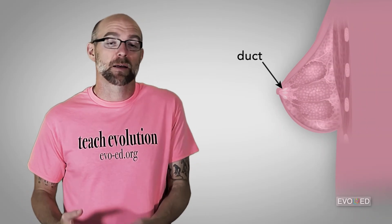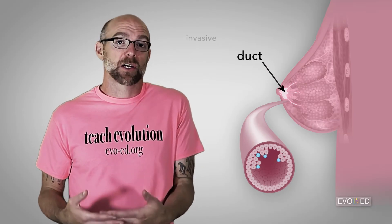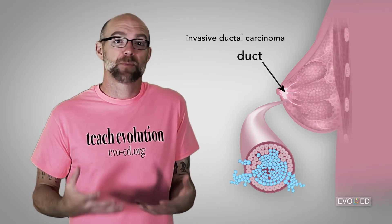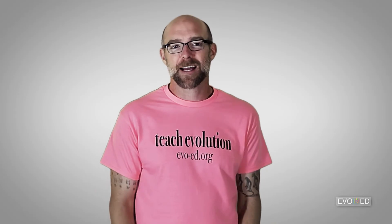Most breast cancers involve the milk duct. The ducts are made up of epithelial cells — the same type of cell that skin is made up of and the lining of most organs. The most common type of breast cancer is called invasive ductal carcinoma, where a tumor forms among those duct epithelial cells. So why are those cells so prone to cancer? It turns out that cells that make up those ducts reproduce at a high rate and on a regular basis, essentially whenever they receive hormone-based chemical signals as part of a menstrual cycle. Any time a group of cells has a high reproduction rate, it makes them more prone to cancer.